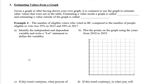In this lesson, we're going to take a look at how to estimate values from a graph. Often, given a graph or if you draw your own, it is common to use the graph to estimate other values that were not in the table. Estimating a value inside a graph or within your points is called interpolation. Estimating a value outside of the graph or outside your table of values or your points is called extrapolation.